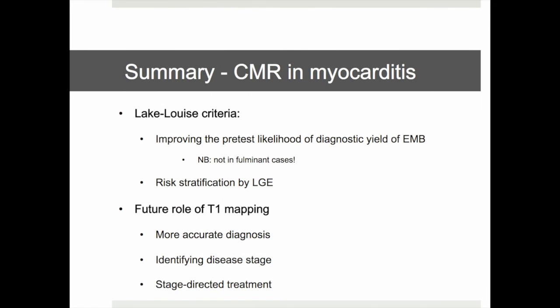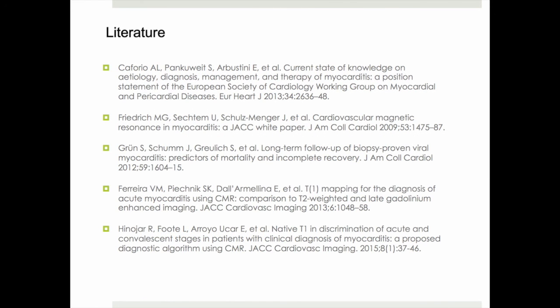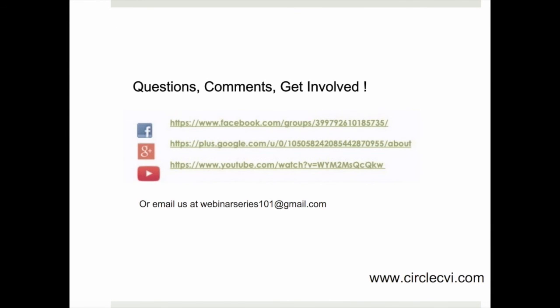In summary, we have looked at the role of Lake Louise criteria in providing supporting evidence in clinically suspected myocarditis, as well as providing risk stratification in patients with previous myocarditis based on the presence of late gadolinium enhancement indicating residual myocardial injury. We have also touched upon the future role of T1 mapping in providing a more accurate diagnosis of myocarditis by identifying disease stage and potentially allowing for a more stage-directed treatment. Thank you for your attention.